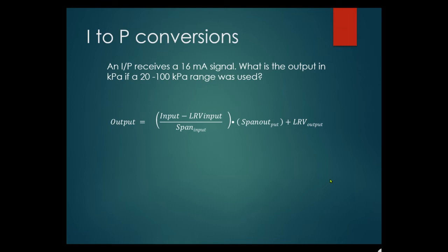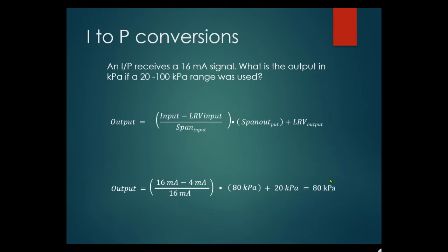Working through the example: input is 16 milliamps, LRV is 4, span is 16 milliamps. Output span is 80 kPa (20 to 100 kPa) and LRV is 20 kPa. The result is 80 kPa. Do a couple of these for easy correct marks on your exams.